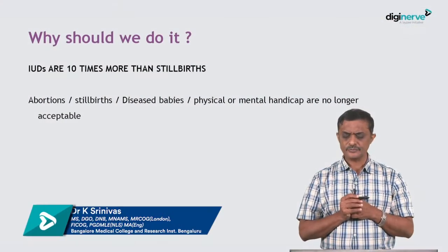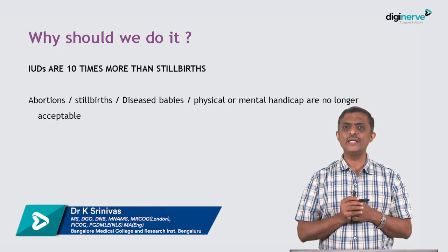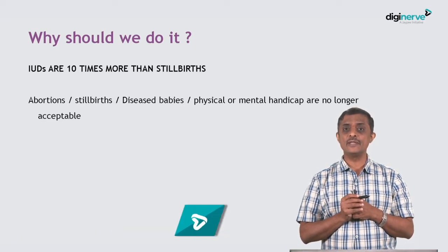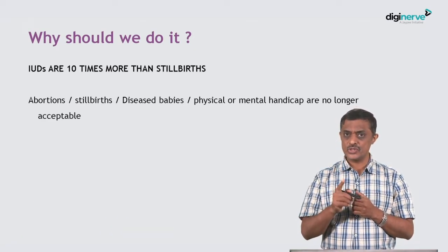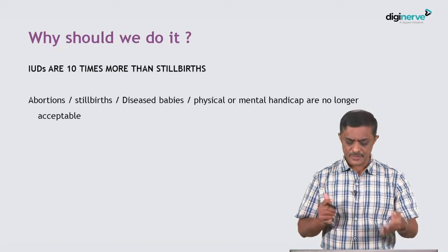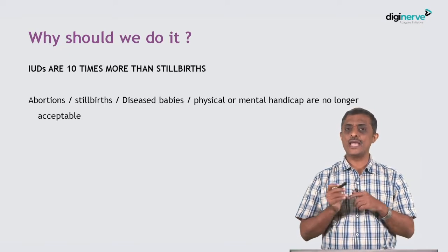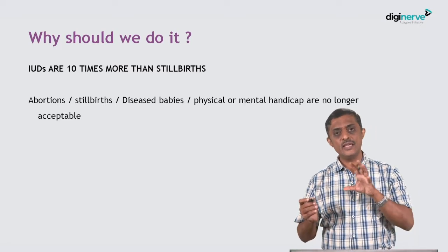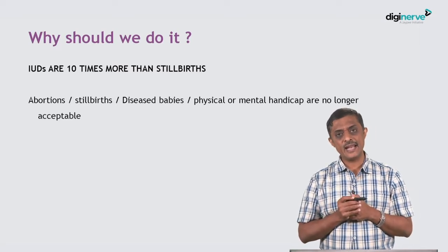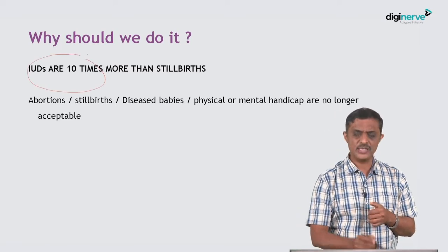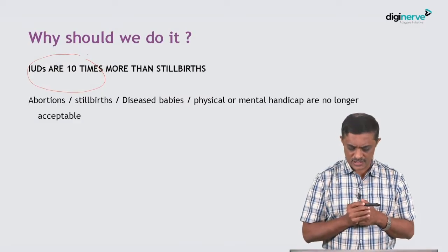Why should we do antepartum surveillance? Intrauterine deaths are 10 times more common than stillbirths. Stillbirths usually happen because of intrapartum events, but intrauterine deaths usually happen because of antepartum events. So if you diagnose things in the antepartum period, these 10 times more IUDs could be really brought down to an acceptable level.